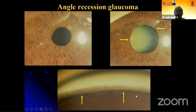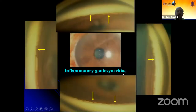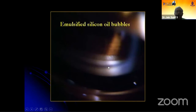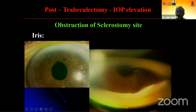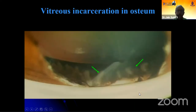In angle recession glaucoma you can see the wide ciliary body band. In uveitic glaucoma you will see goniosynechiae, but it is different from angle closure because you can see wide open angles in between. Silicone oil glaucoma is another entity. Post-trabeculectomy, gonioscopy sometimes helps you — especially if the pressure starts rising in the immediate post-operative period. You see peaking of the pupil, and on gonioscopy you realize it is the peripheral iris obstructing the internal ostium. Sometimes there could also be vitreous incarceration in the ostium.